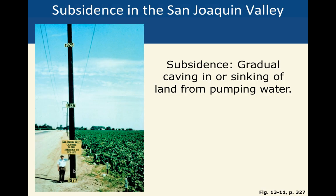One thing that can happen as a result is subsidence — when you pump water out of the ground, the land starts to sink because there's nothing to hold it up anymore, just air below. This is a famous picture: in 1925 this was the elevation of the land, and over the next 50 years the elevation changed considerably because of irrigation for croplands.